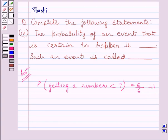Now, from above discussion, we get probability of sure event is 1.